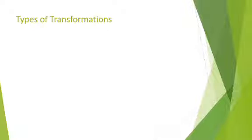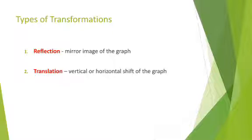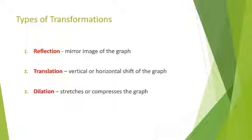There are three types of transformation. First one is reflection. Reflection means mirror image of the graph — just like how you see your own reflection in front of a mirror. Then translation, which means a vertical or horizontal shift of the graph — shifting from right, left, top, or bottom. And third, dilation, which means you will stretch the graph or compress the graph, like zooming out or shrinking. So these three things we are going to see today.